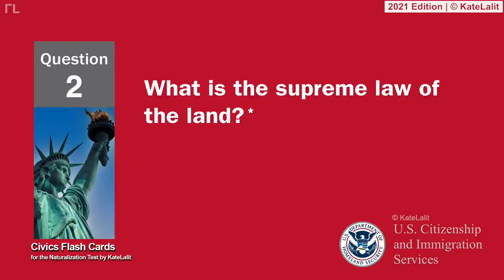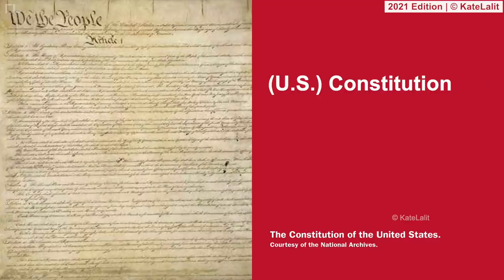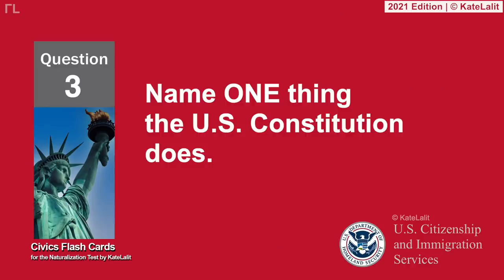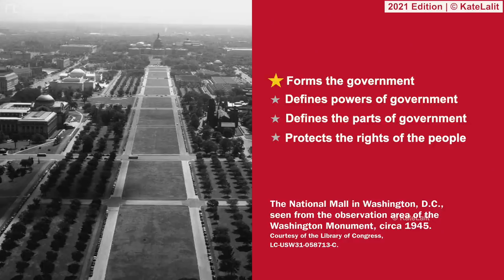What is the supreme law of the land? The U.S. Constitution. Name one thing the U.S. Constitution does: Forms the government. Defines powers of government. Defines the parts of government. Protects the rights of the people.